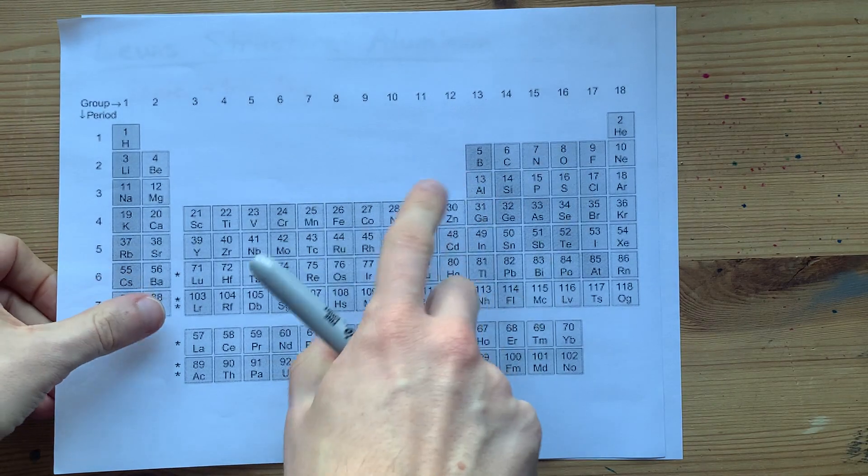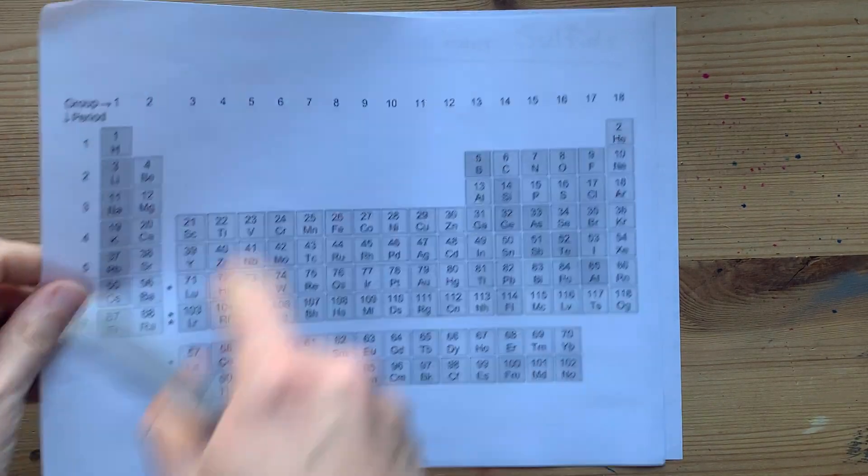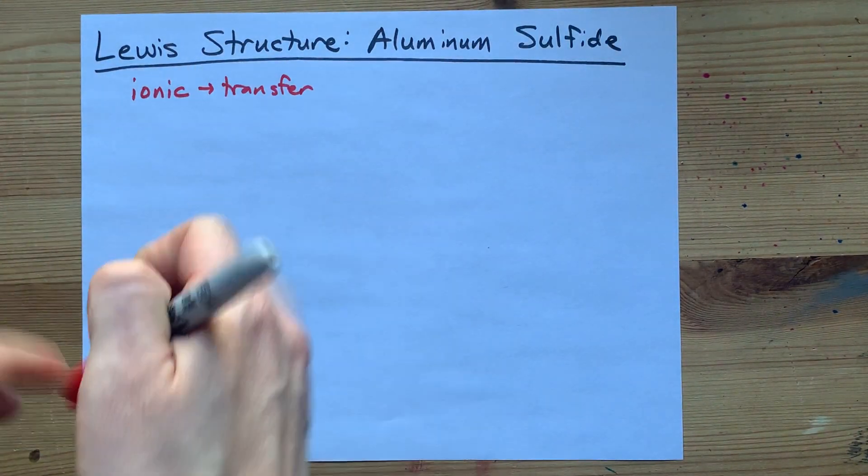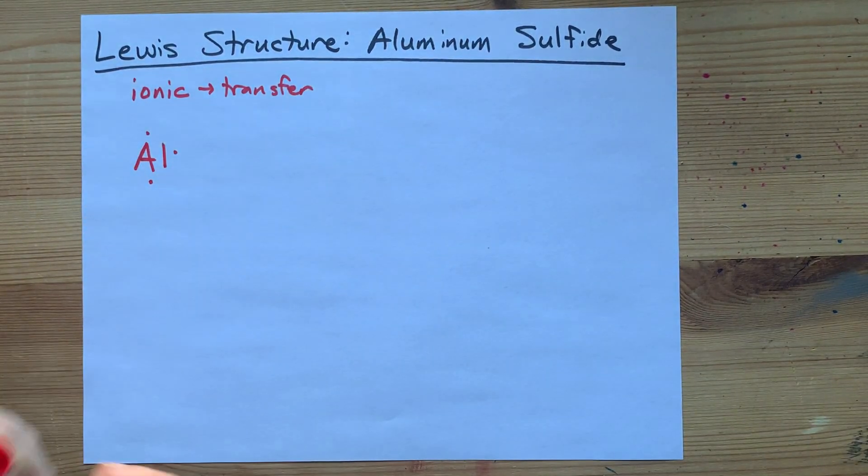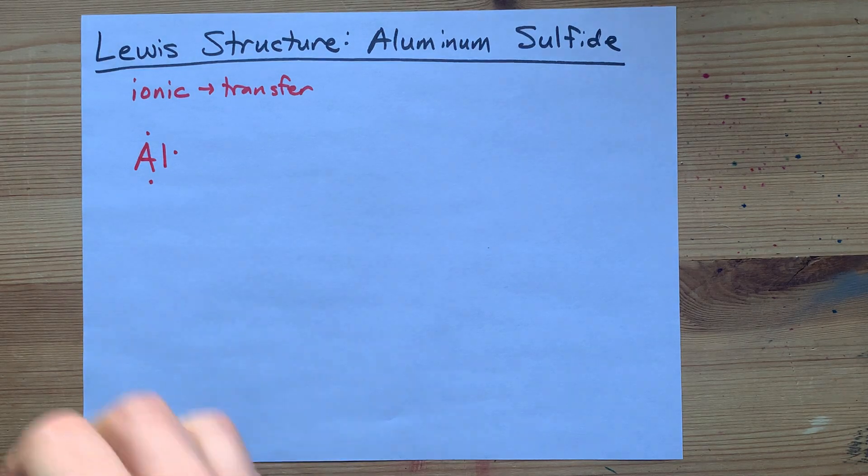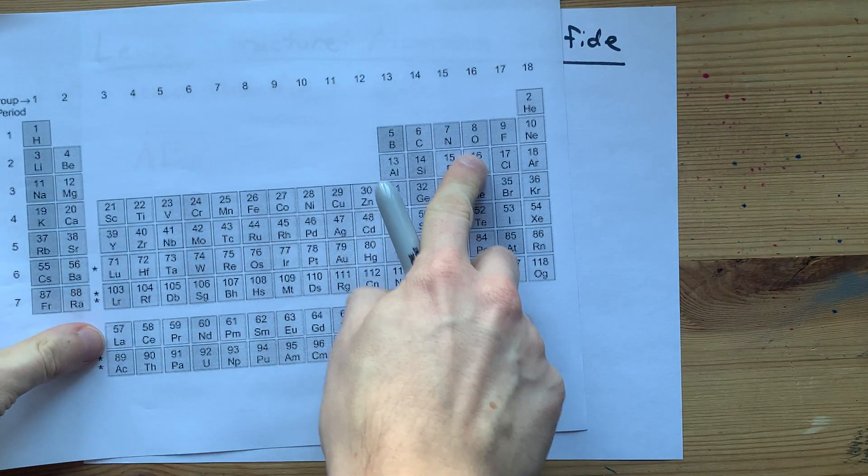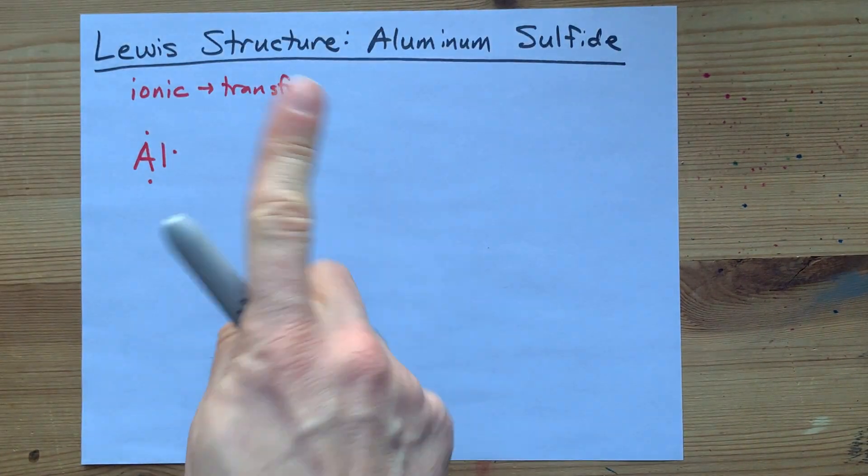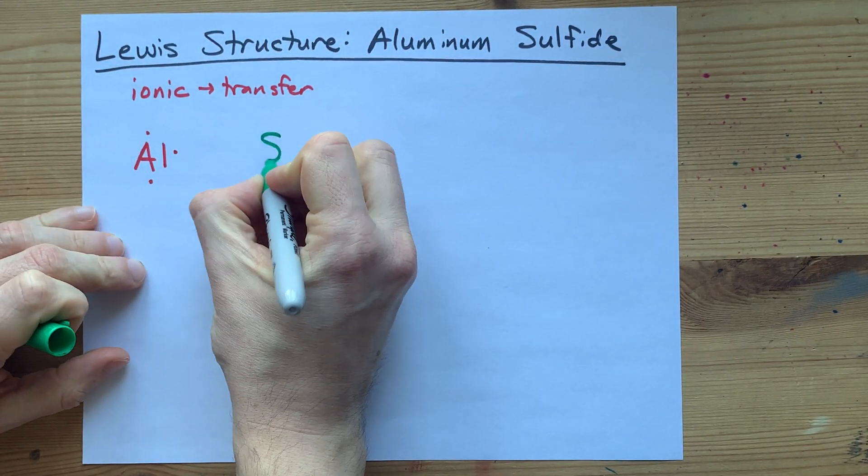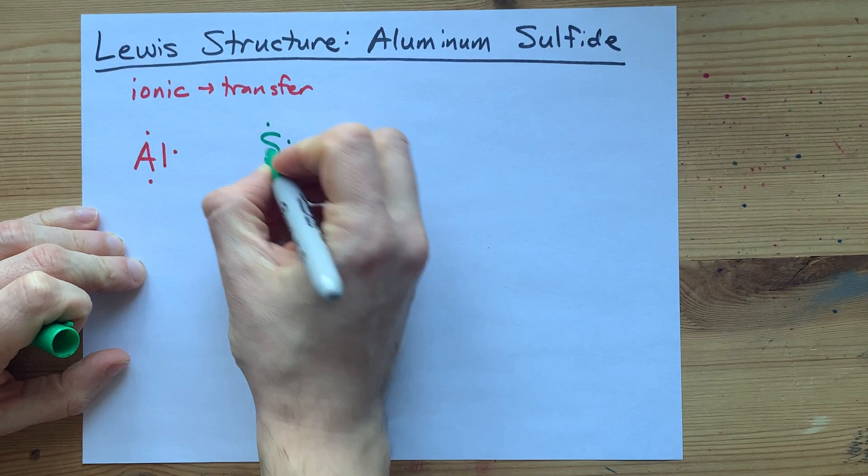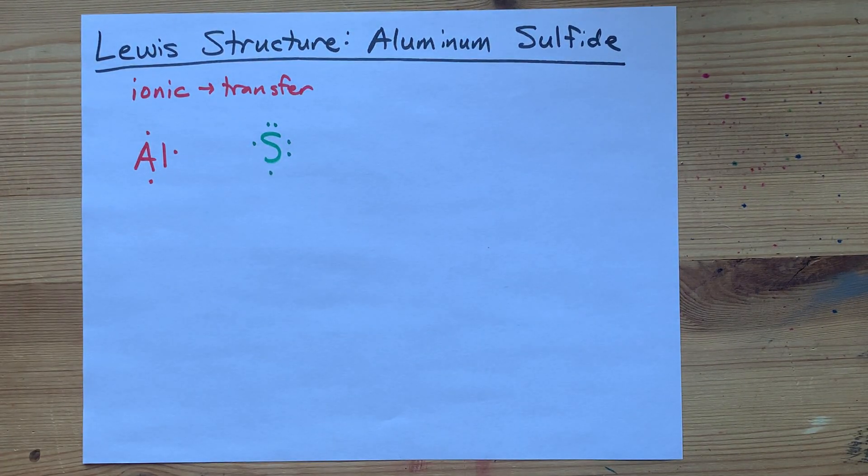What electrons? Well aluminum is in group 13 and so each aluminum atom brings three valence electrons with it. One, two, three. Sulfur is in group 16 so it brings six valence electrons with it. One, two, three, four, five, six valence electrons.